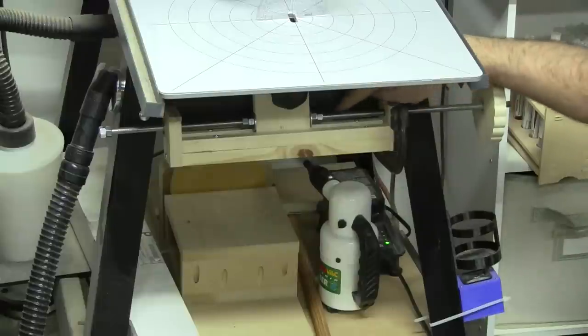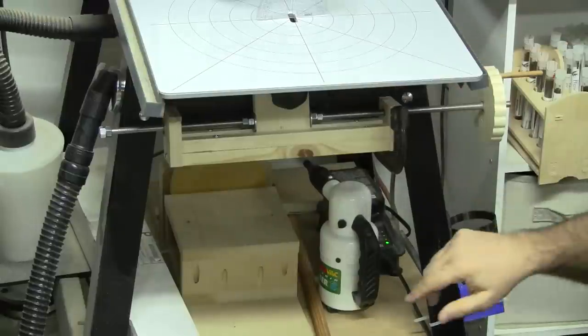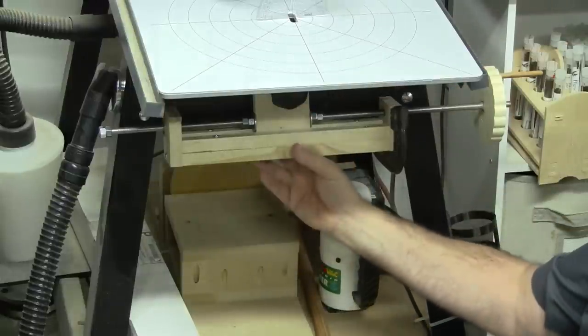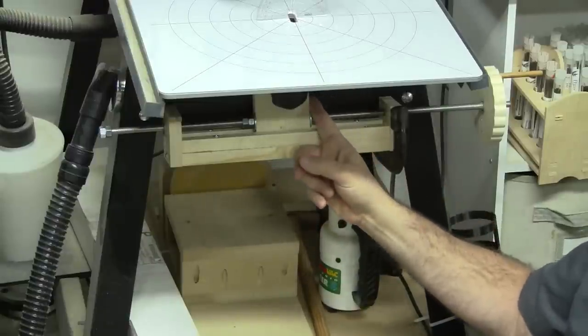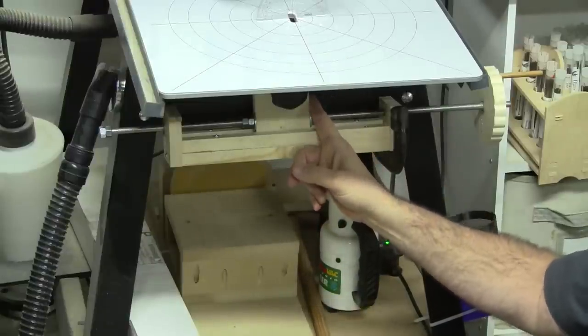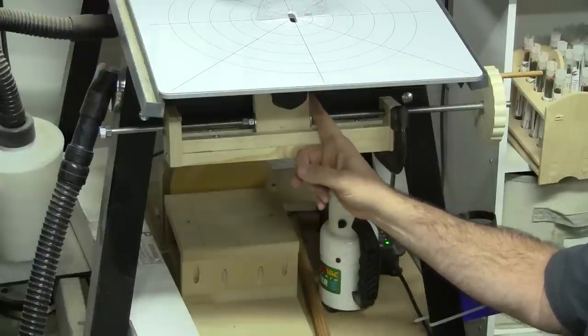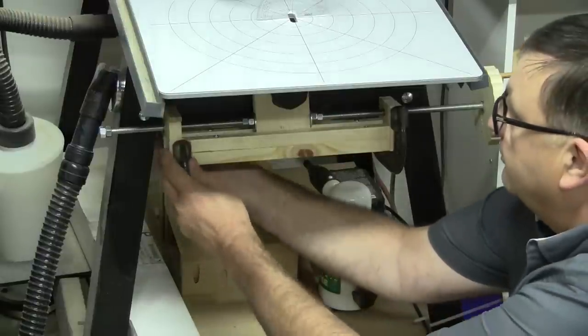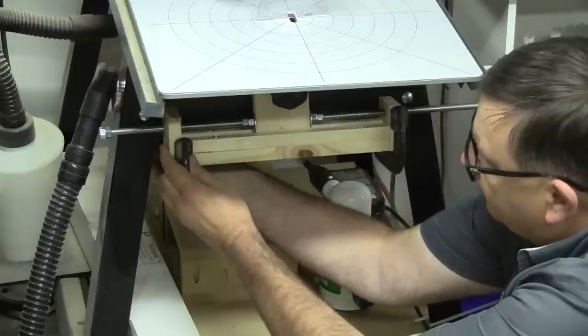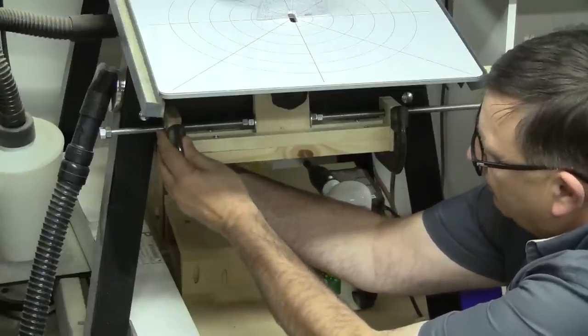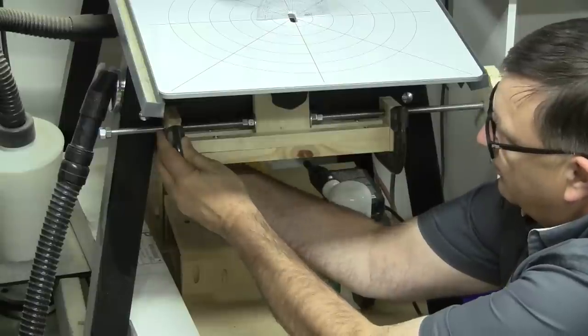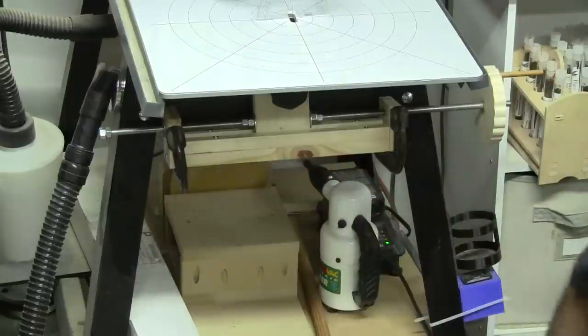The clamp is clamped to this piece right here, and it just simply, you push the jig in until the clamp goes up and captures the handle. Again, I'll get underneath here in a minute and give you a better look.